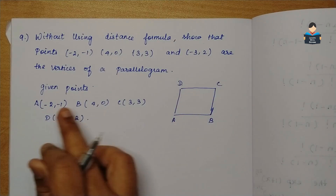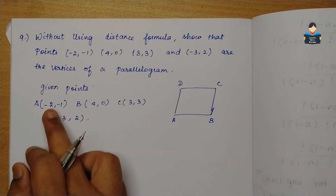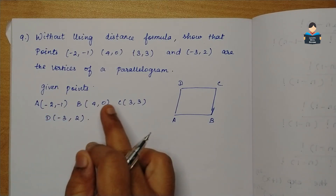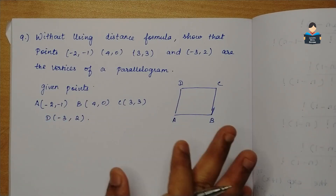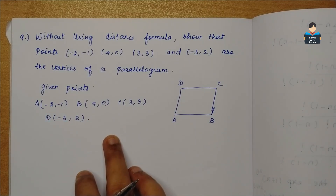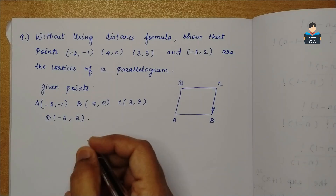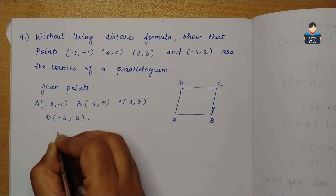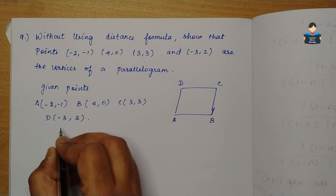These points are minus 2, minus 1, so we have to prove ABCD is a parallelogram.